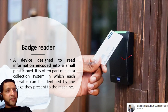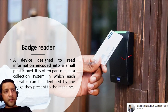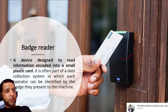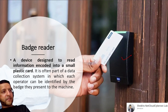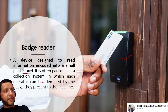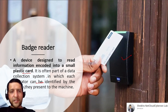A Badge Reader is a device designed to read information encoded into a small plastic card — such as a smart card. It is often part of a data collection system where each operator is identified by a badge they present to the machine, as seen in organizational access control.